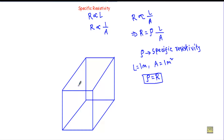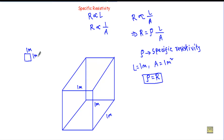Consider a cube where each side has a length of 1 meter. If we take a cross-section by cutting through it, we get a square cross-section. Therefore the cross-sectional area equals 1 meter multiplied by 1 meter, which gives A equal to 1 meter square.